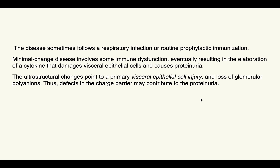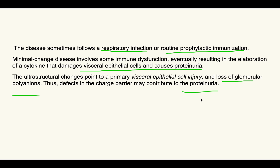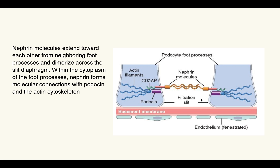Minimal change disease is thought to be related to immunity because it sometimes follows respiratory infections or routine prophylactic immunization. The proposed mechanism is elaboration of cytokines that damage the visceral epithelial cells, causing proteinuria. Another theory points to loss of glomerular polyanions — a change in the anionic charge barrier that also contributes to proteinuria. However, the exact pathogenesis is not fully known.